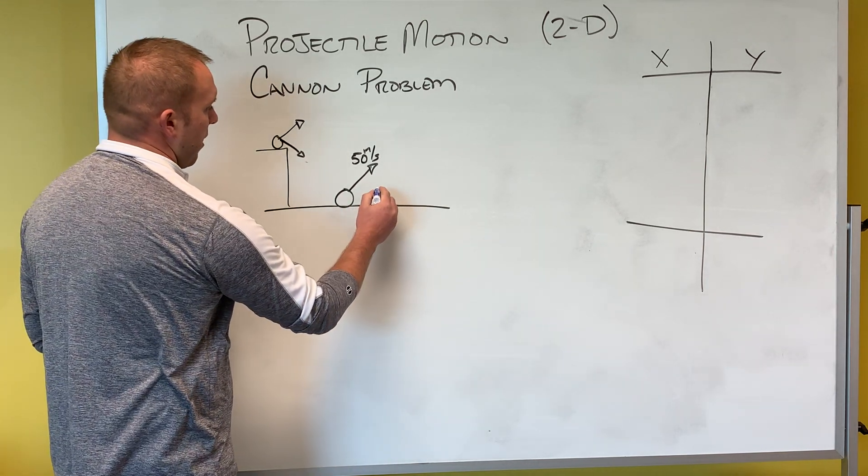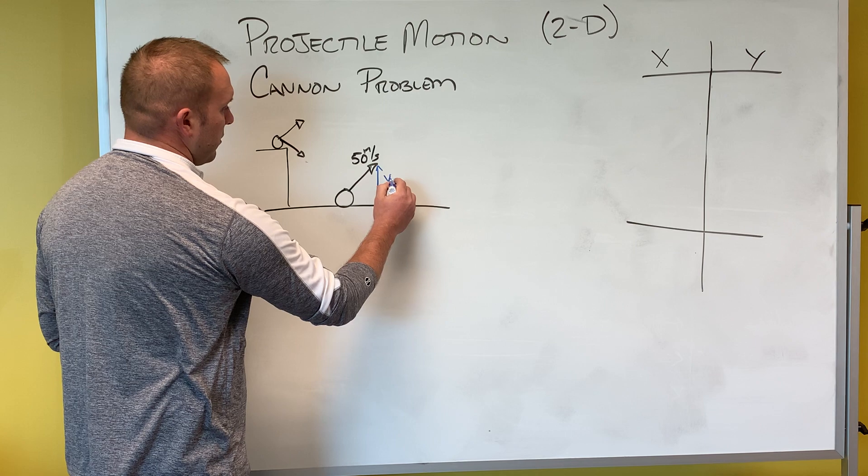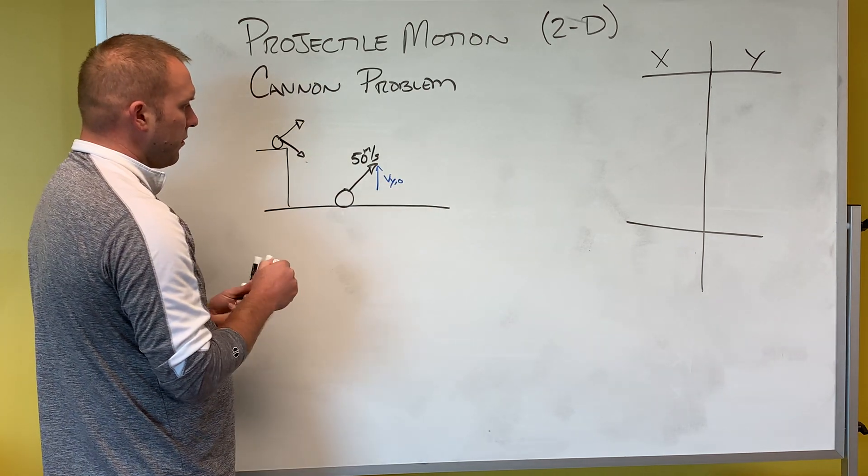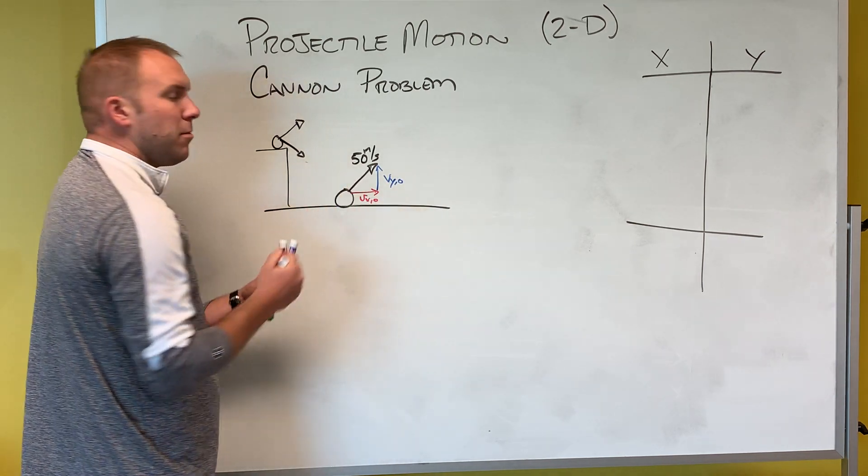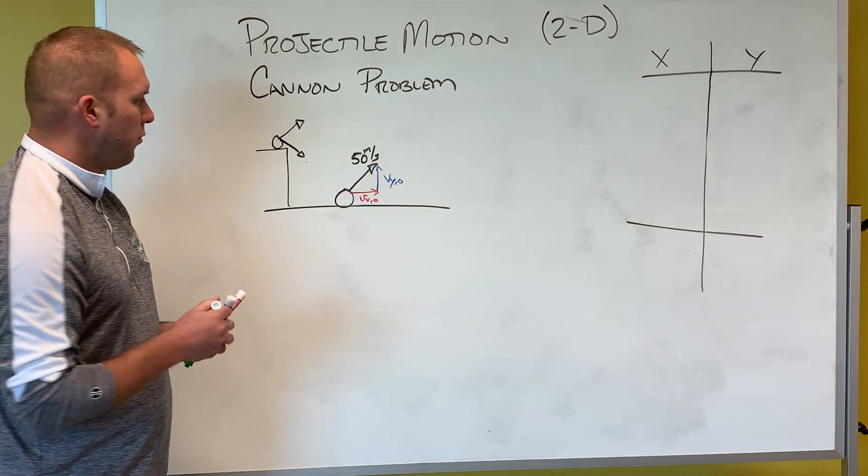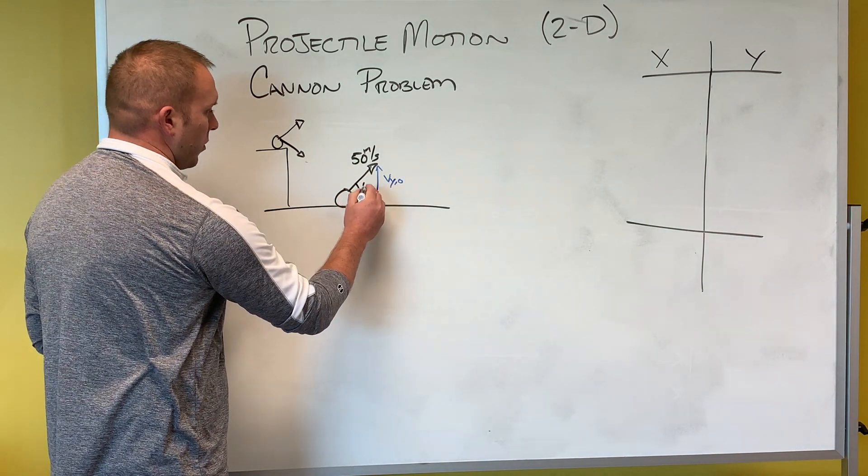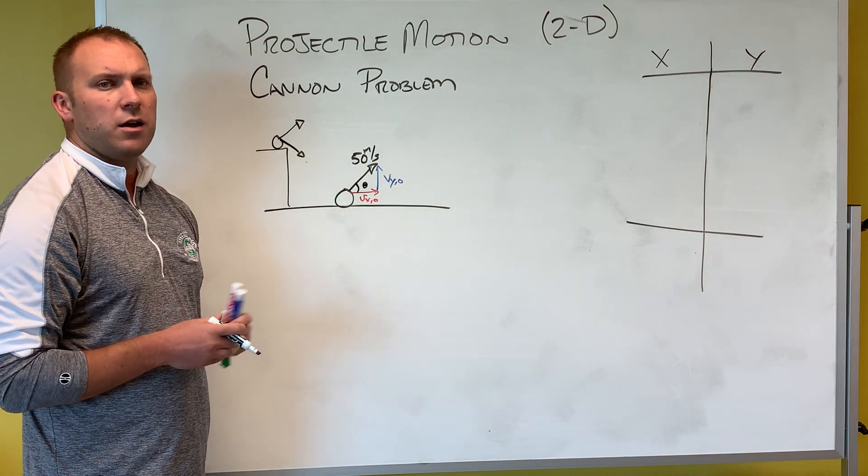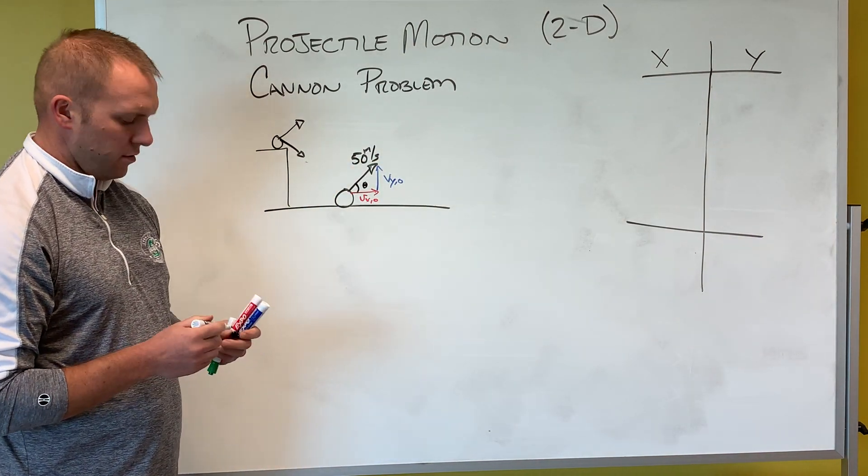So what that means is we would have a vertical velocity as well as a horizontal velocity. Those would be my components of my total velocity. If we were given an angle here we could determine what the x initial velocity is and what the y initial velocity is.